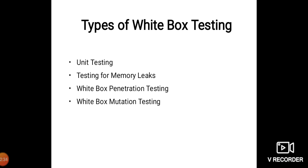Apart from the above, there are two more types of white box testing: penetration testing and mutation testing. In penetration testing, the tester or developer has full information about the application source code, detailed network information, IP addresses involved, and all server information the application runs on. The aim is to attack the code from several angles to expose security threats. Mutation testing is often used to discover the best coding technique to use for expanding a software solution.